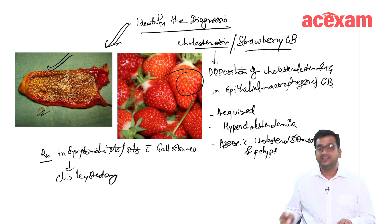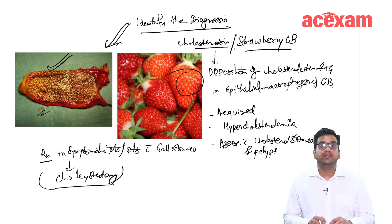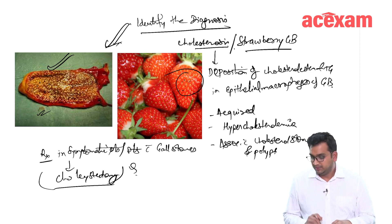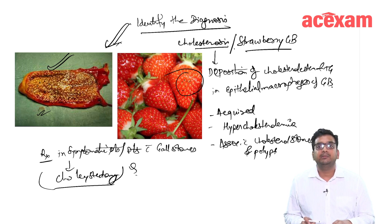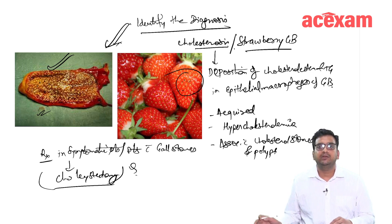It is not a pre-malignant disorder, so a prophylactic cholecystectomy is generally not done. But if the patient is symptomatic, then we go ahead with the cholecystectomy.